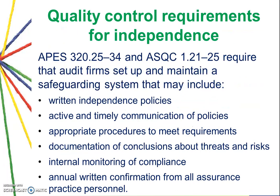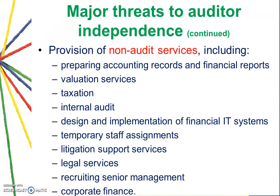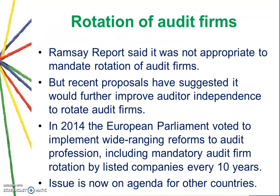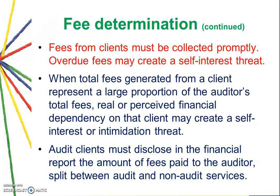Safeguards aim to reduce or resolve circumstances that threaten auditor independence. Some major threats include: the auditor maintaining employment or financial or business relationships with the client; providing certain non-audit services; not being rotated after seven years; and entering into contingent fee arrangements which compromise independence. Also, overdue fees from a client mean the auditor is effectively giving the client a loan, which creates a self-interest threat.